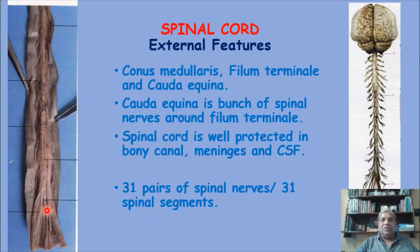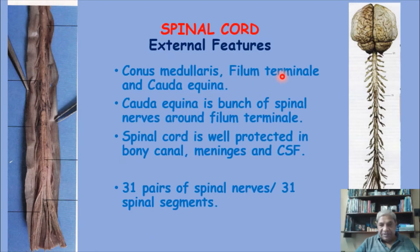From the tip of the conus medullaris, there extends a fibrous strand going right up to the coccyx first vertebra, where it fuses with the body of the coccyx. This is called the filum terminale - the extension from the tip of the conus medullaris to the coccyx vertebra. It does not contain any nervous tissue; it is just a fibrous strand, mostly condensed from the tissue of the pia mater.